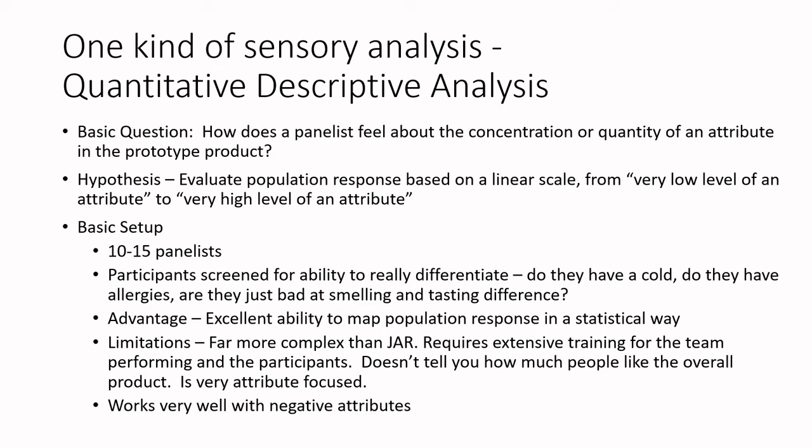The limitation is that it's very complicated compared to just-about-right testing. If you're a product developer and just need to prove that it's delicious, just-about-right is way easier and cheaper. But if you need to statistically benchmark and show how your product is performing against other products — whether within your own product range, during a manufacturing facility changeover, or making a private label knockoff of a national brand — QDA allows you to benchmark each attribute and confirm it's statistically identical.